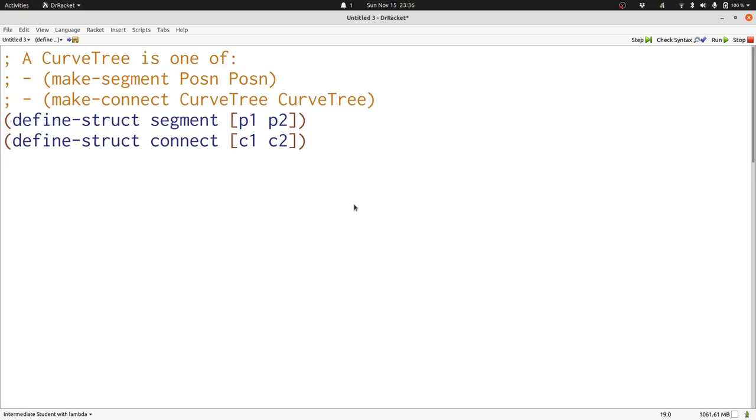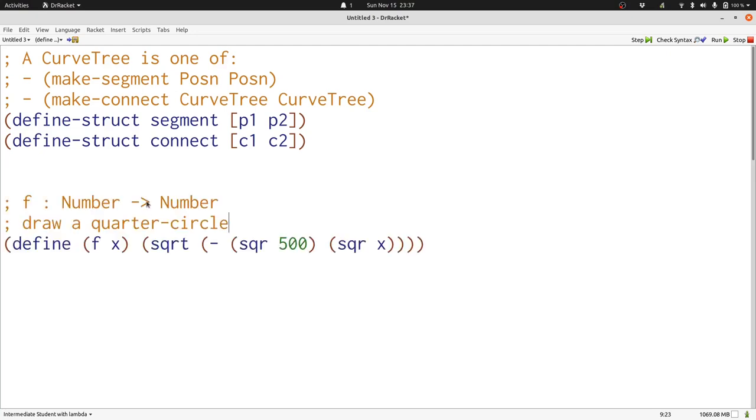So, let's start thinking about how we might construct some curve trees given a particular function. Here's the function that drew the quarter circle we saw earlier. What we're going to do is start by creating some curve trees that approximate this function.